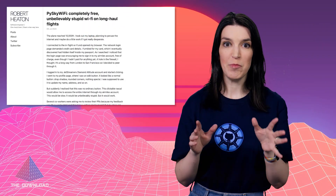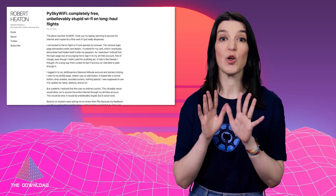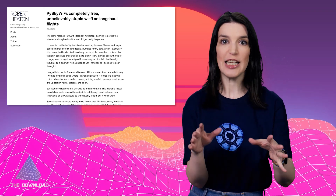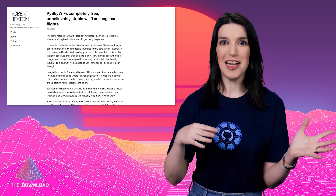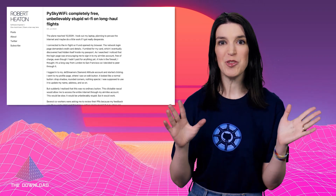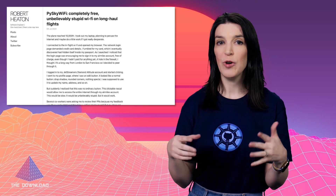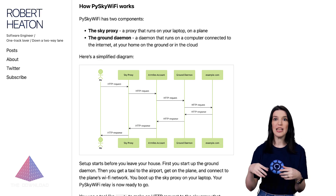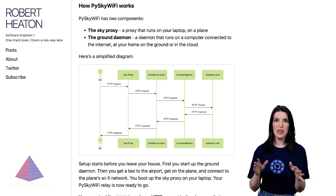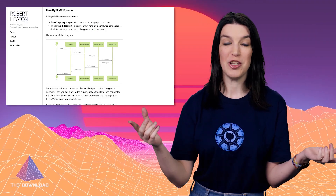The next thing I want to share is an amazing blog post from Robert Keaton called Pieskey Wi-Fi — completely free, unbelievably stupid Wi-Fi on long-haul flights. Robert details how he was able to get free Wi-Fi on a long-haul flight by exploiting a name field on an airline's website. Airlines will allow you to log in to your own account for free to make changes to that account, but if you continue trying to change the name field, it keeps pulling that field for changes and keeps you online. He developed a Python script that essentially lets you tunnel through that field.